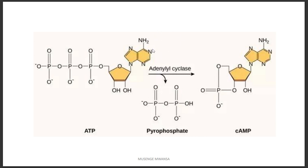This accumulation of water in the intestinal lumen results in diarrhea. That is how cholera causes diarrhea — through the action of increased cyclic adenosine monophosphate.